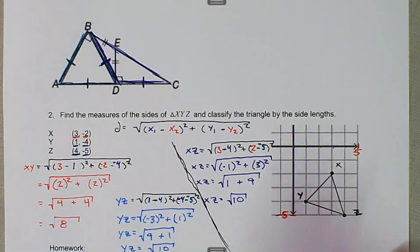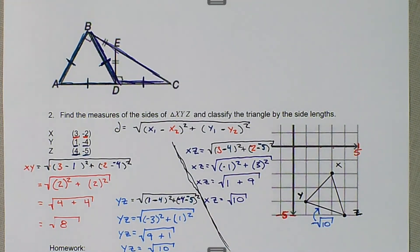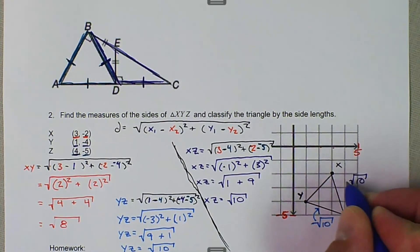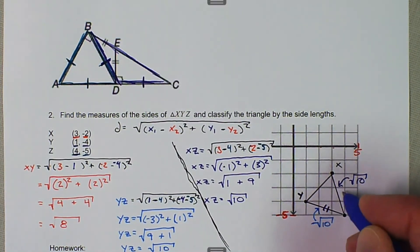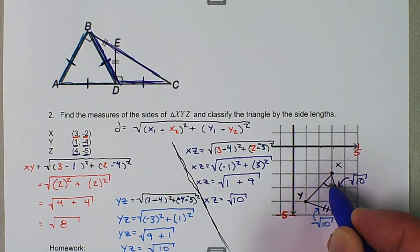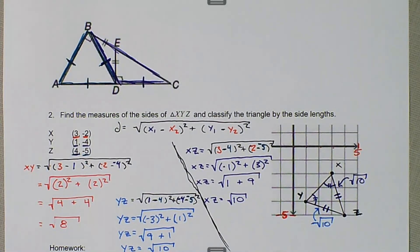Now we have two sides equal to the square root of 10 — XZ and YZ are congruent. Because we have two sides that are congruent, we know the opposite base angles are also congruent. So we know that this is an isosceles triangle.